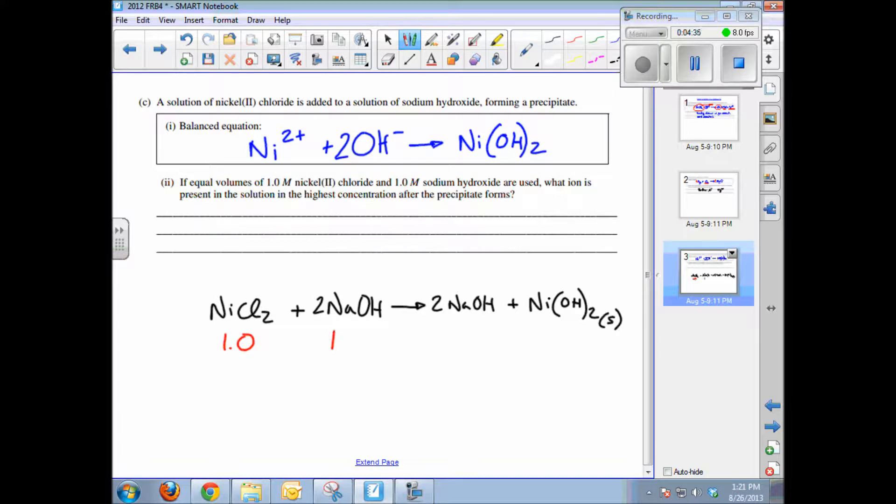Some of the nickel gets consumed in forming the solid precipitate, and some of the hydroxide gets consumed. In fact, all the hydroxide—that's the limiting reactant. But notice what we have left behind: some of the hydroxide got consumed in forming the precipitate, so there's less than 1.0 molar left behind. Actually, it's all gone in solution.